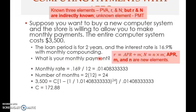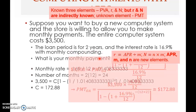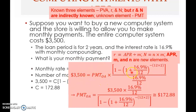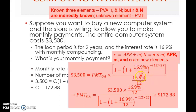We can use the formula for determining the annuity payment. The general formula for the present value of annuity: present value equals the annuity payment multiplied by [1 minus (1 plus r) raised to the power of negative capital N], all divided by r. Here r is 16.9% divided by 12, which is APR divided by m. Capital N is small n multiplied by m, so two years multiplied by 12 equals negative 24.